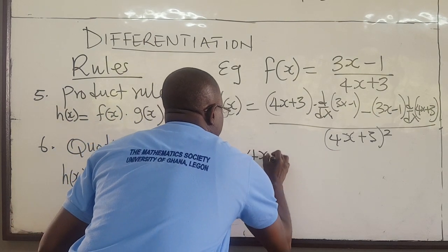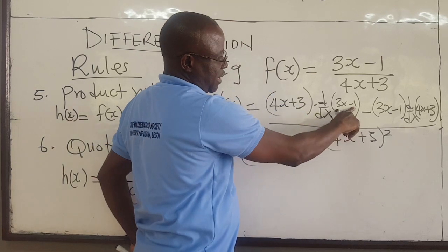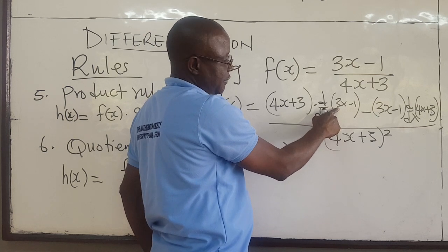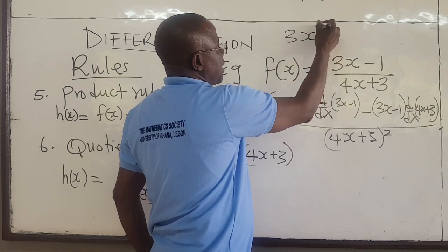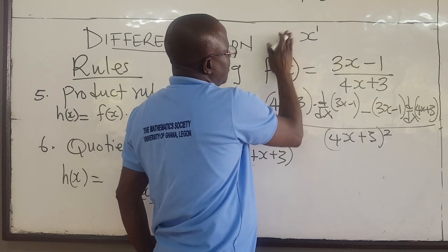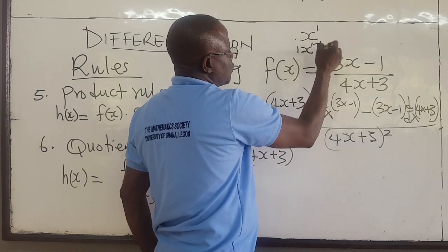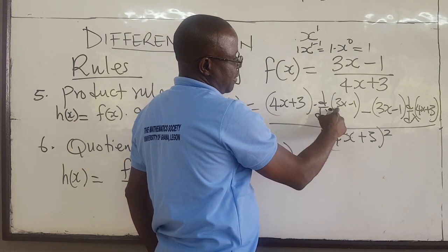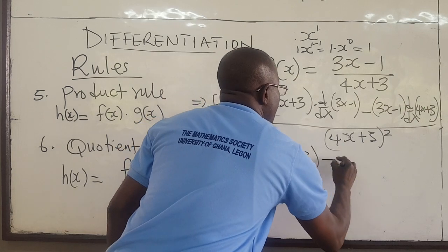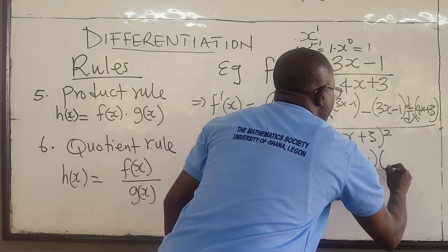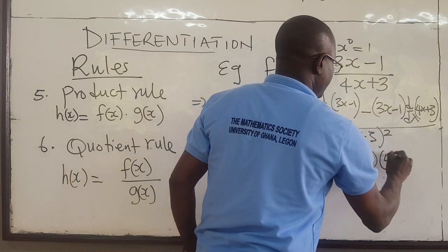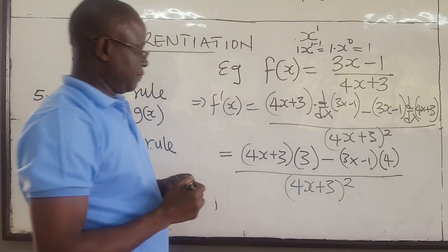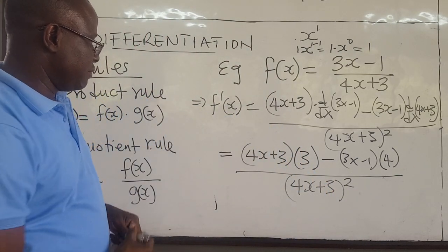This equals (4x plus 3) times 3 — since the derivative of 3x minus 1 is just 3, because the constant 1 disappears and 3x differentiates to 3 using the power rule — minus (3x minus 1) times 4 — since the derivative of 4x plus 3 is 4 — all over (4x plus 3) squared. The rest is simplification.